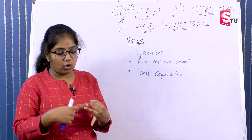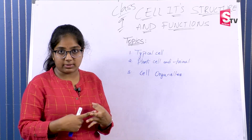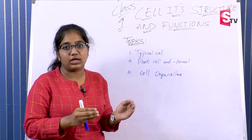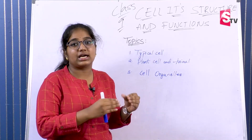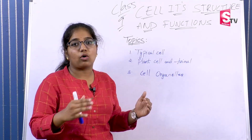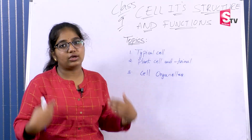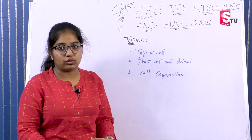We have a tissue, organ, and organ system. A group of same-form cells makes a tissue. With a group of cells we get an organ, and organs together form the human body.